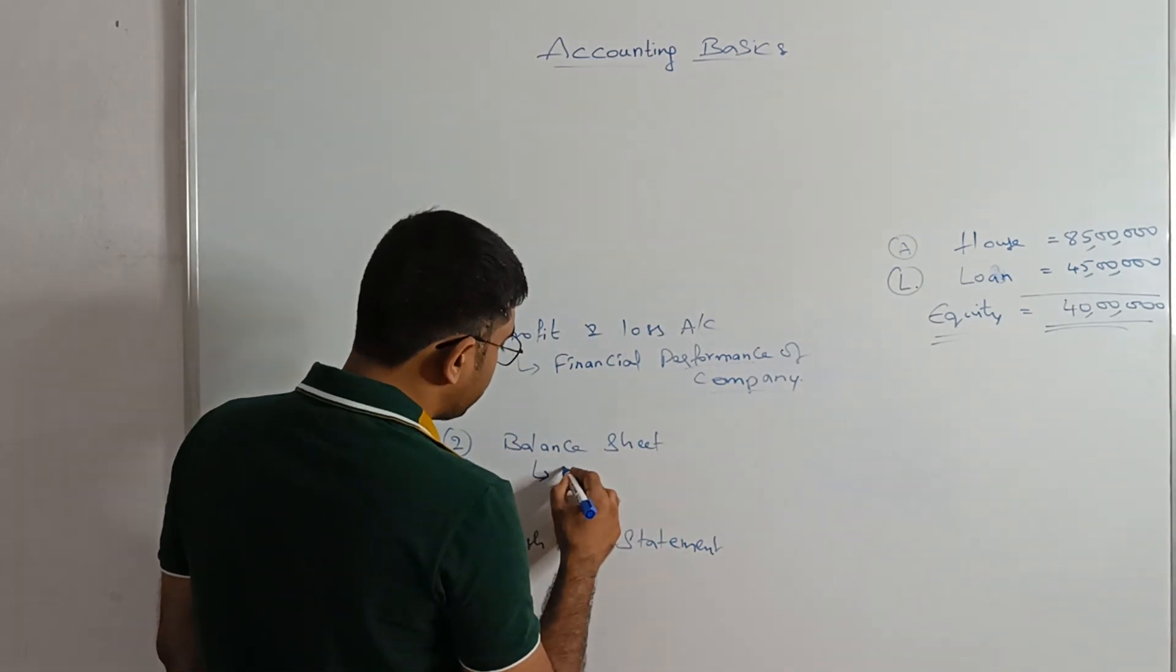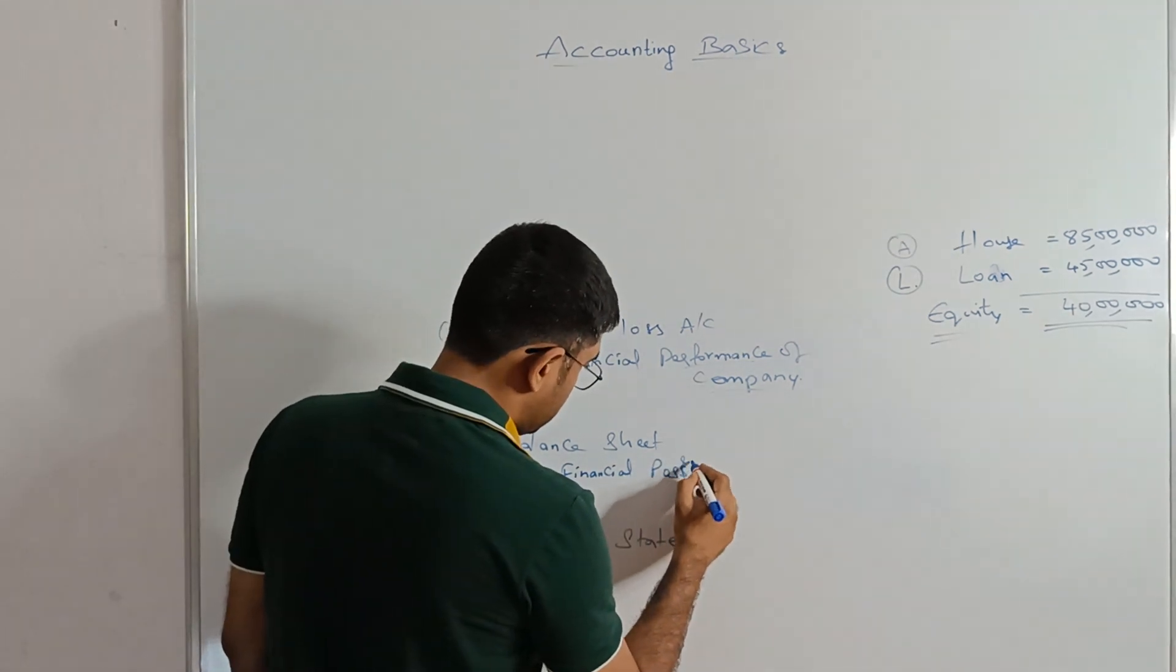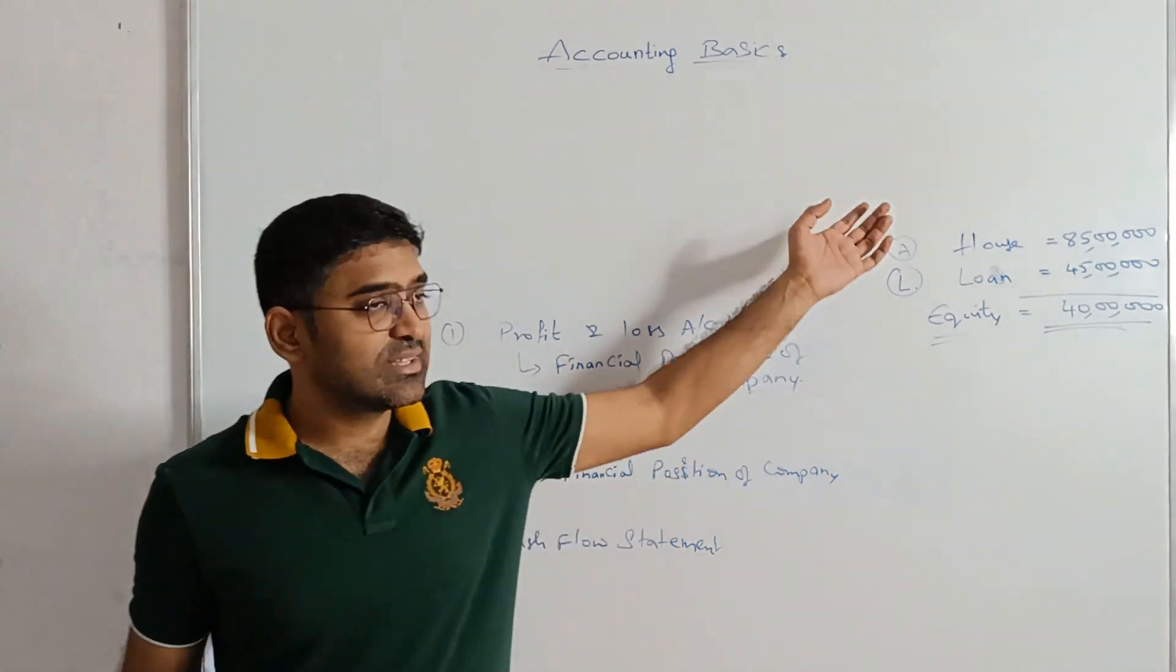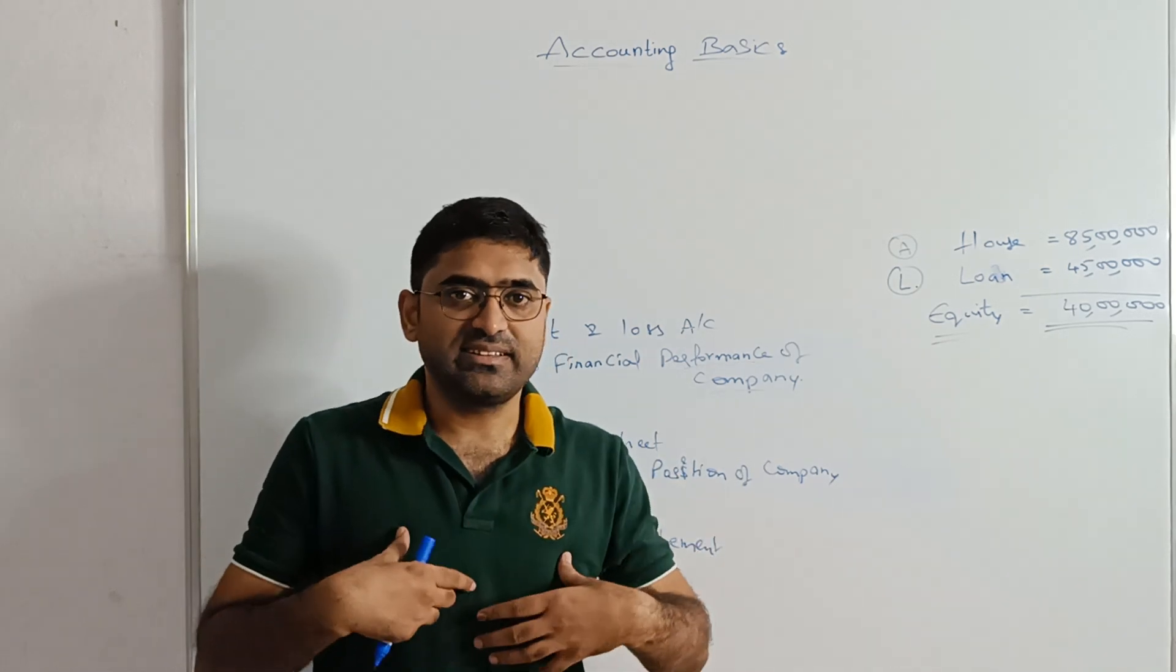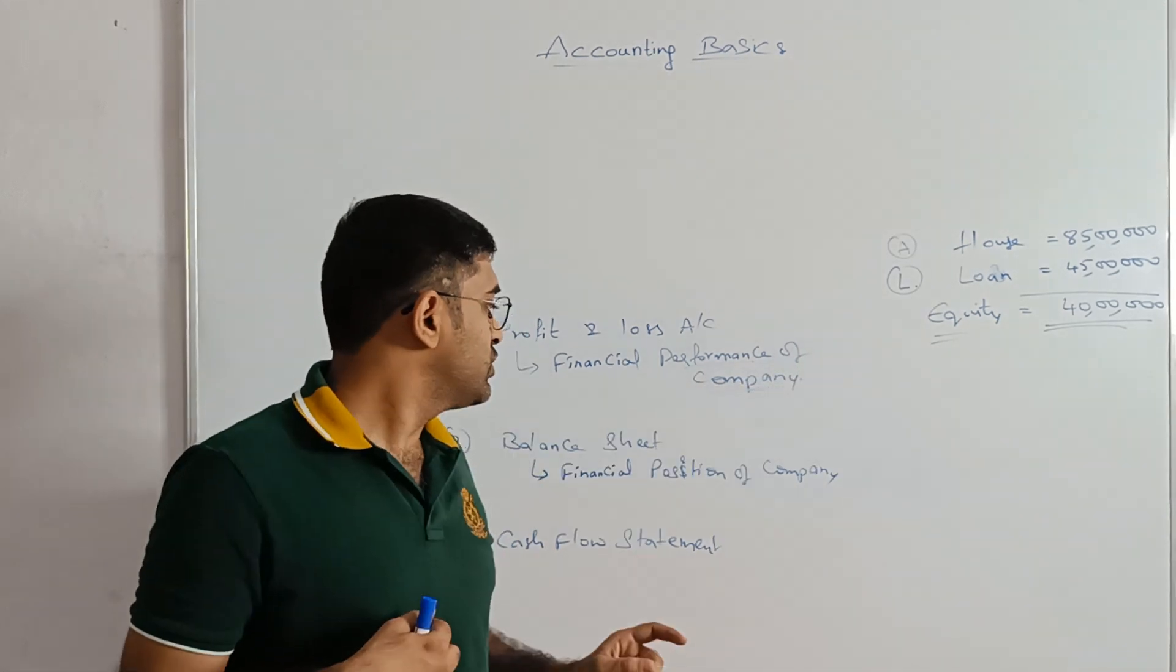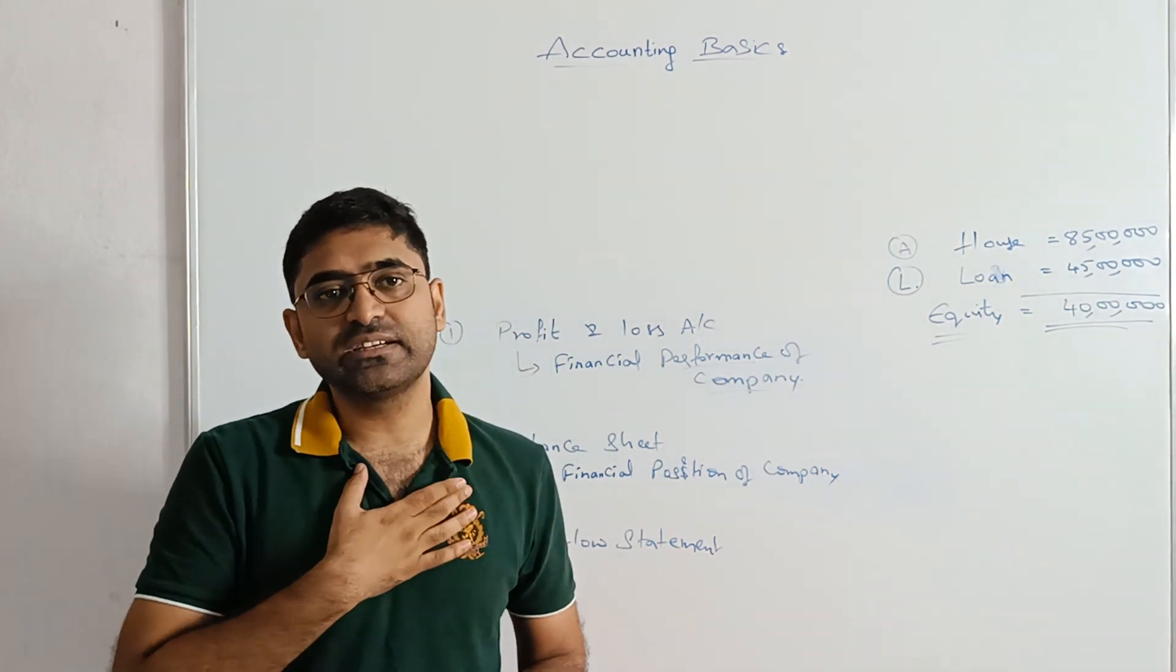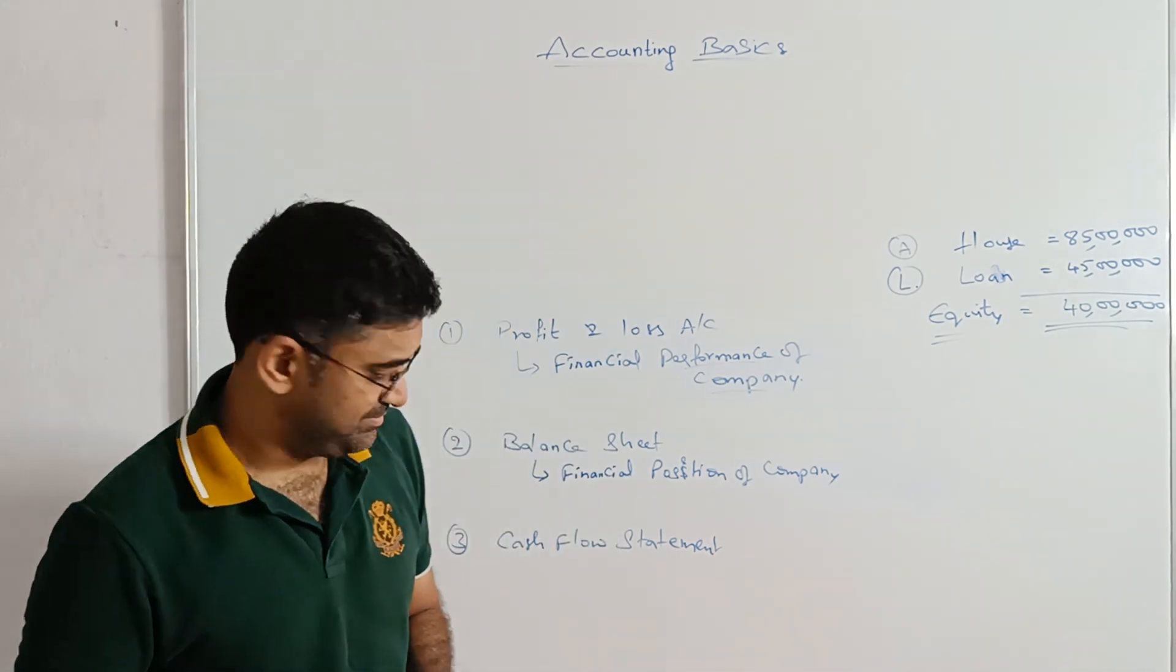Balance sheet tells the financial position of the company. In this example the company have assets worth 85 lakhs, liability is worth 45 lakhs and the company's net worth, the company's actual worth is 40 lakhs. So this is told by the balance sheet of the company. So when you see a balance sheet, there is this owner's equity that itself tells about the financial position of the company.